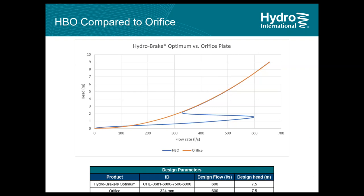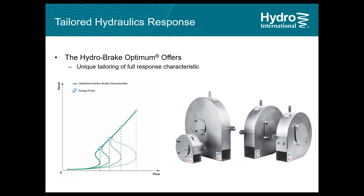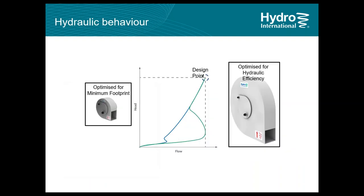This feature can also be leveraged to optimize use of space in the existing pipe network. With the HydroBrake Optimum, we can reduce the storage requirement by up to 30 percent — a big saving for any project. Another advantage is that you can get tailored hydraulic characteristics to suit your requirements. Normally we size the HydroBrake for maximum hydraulic efficiency, meaning increased flush flow and delayed kick flow — increasing discharge volume while staying within discharge limits.